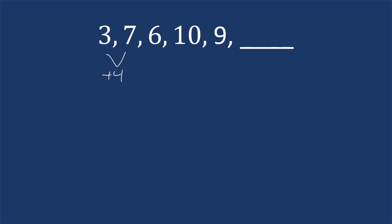In this pattern, we're going from three to seven, so that's adding four. Going from seven to six, we're subtracting one. Then going from six to ten, we're adding four. Going from ten to nine, we're subtracting one. So we see we're alternating between adding four and subtracting one. We expect the next operation to be adding four, and nine plus four is thirteen. So thirteen would be the next one in that pattern.